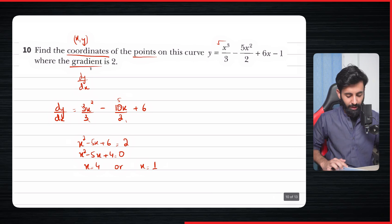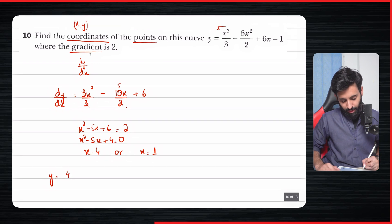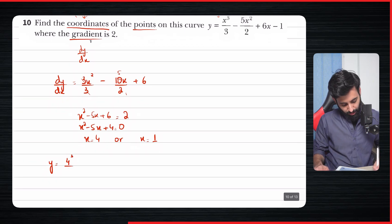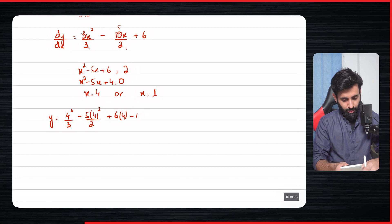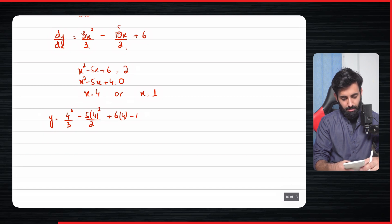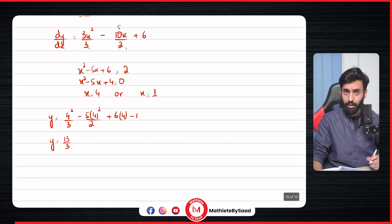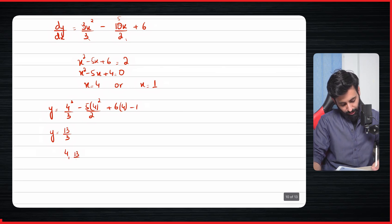Now if you stop here, that means you're not going to get full marks. Because remember, what you've done so far is you've only found out the value of x. You still need the value of y. So in order to find out the value of y, what we're going to do is we're going to take these values one by one, and we're going to plug them in the original equation, that means in the equation of the curve. So here goes: 4 cubed upon 3 minus 5 into 4 squared upon 2 plus 6 into 4 minus 1. I'm just going to work this out directly in the calculator again. So we're looking at y equals 13 over 3, which is the correct answer. But make sure to write it in point form, that means the way we normally write the coordinates of a point x comma y. So 4 comma 13 upon 3, so that's one point.